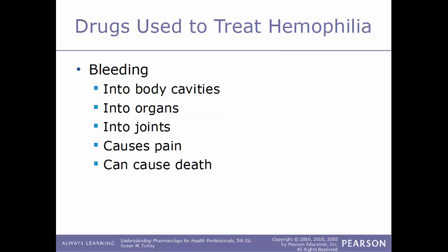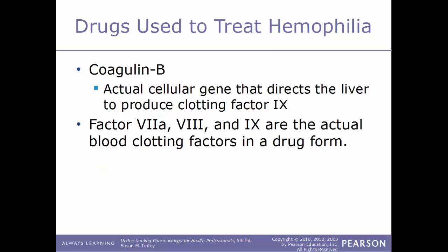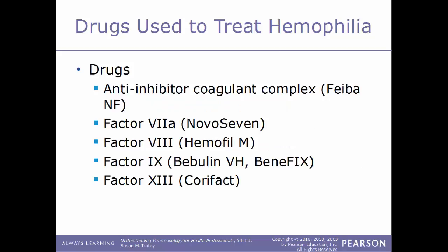When an injury occurs in a hemophilia patient, bleeding can get into body cavities, organs, and joints, causing severe pain and even death if not recognized and treated quickly. One specific drug developed is called Coagadex, which uses viral therapy to deliver the cellular gene directing the patient's liver to produce clotting factor number 9. Clotting factors 7a, 8, and 9 are available in manufactured drug form. Examples include anti-inhibitor coagulant complex (also known as Feiba NF) and factor VIIa, sold under the name NovoSeven.